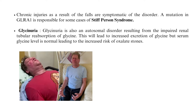Glycinuria is an autosomal disorder resulting from impaired renal tubular reabsorption of glycine. This leads to increased excretion of glycine, though serum glycine levels are normal, resulting in an increased risk of oxalate stones.